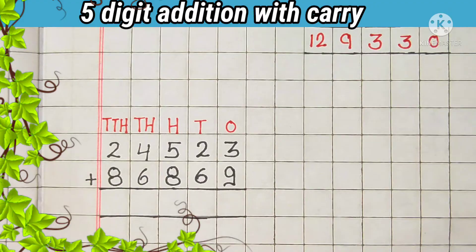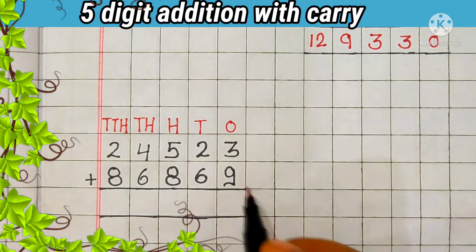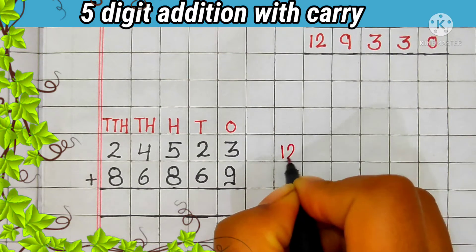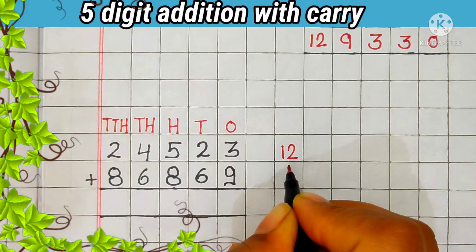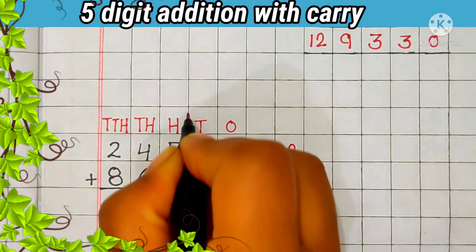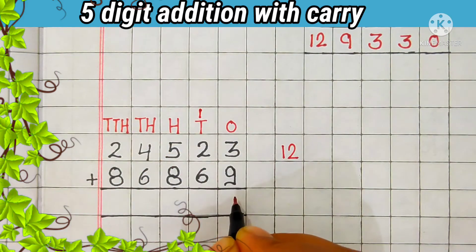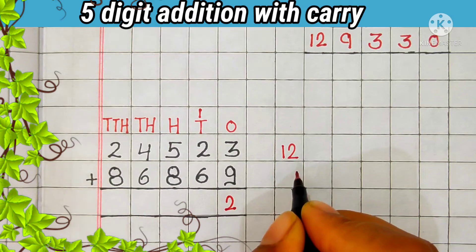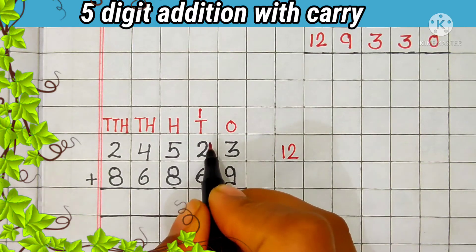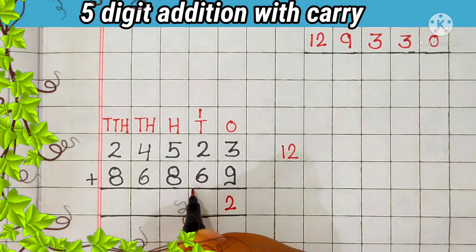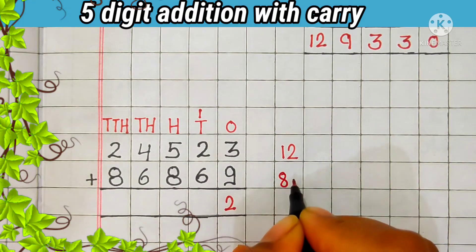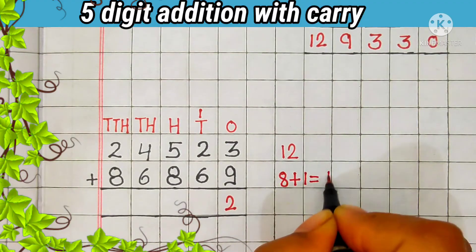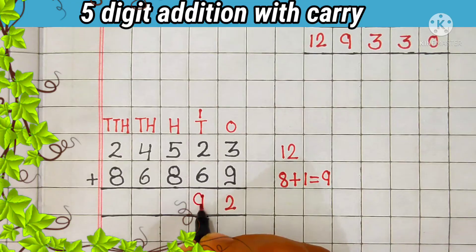Now we will solve the last example. 3 plus 9 is equal to 12. 12 is a 2-digit number. Now we will carry 1 to the 10s place, and 2 comes in the answer. Then let's add the digit at the 10s place. 2 plus 6 is equal to 8; 8 plus 1 carry is equal to 9. Answer is 9.